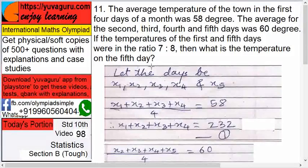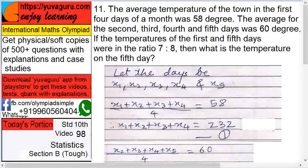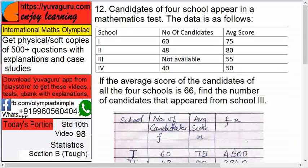So X5 is 64, that's what we want - what is the temperature on the fifth day? So 64 degrees. Okay, next: Candidates of four schools appear in a mathematics exam. The data is as follows: School 1, 2, 3, 4, number of candidates 60, 48, not available, and 40, and average scores...